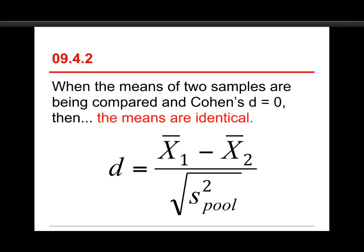Let's take a look again at the formula here. The numerator is the mean one minus mean two, and if those are identical, if it's the same score—a score minus itself—that's the only situation in which you would get zero. So, if d is equal to zero, then the means must be identical.